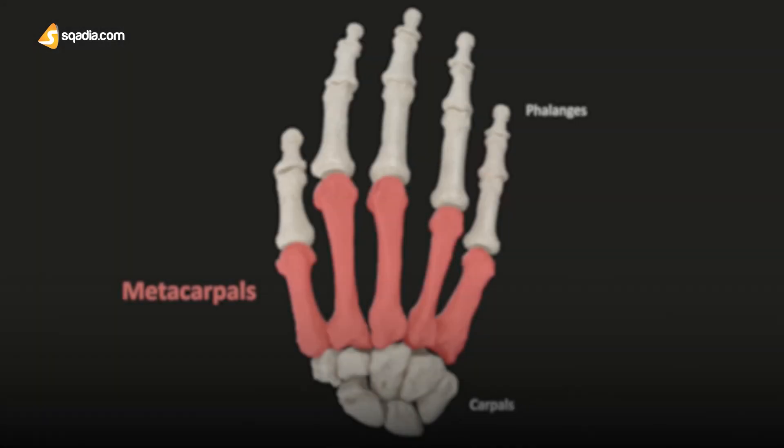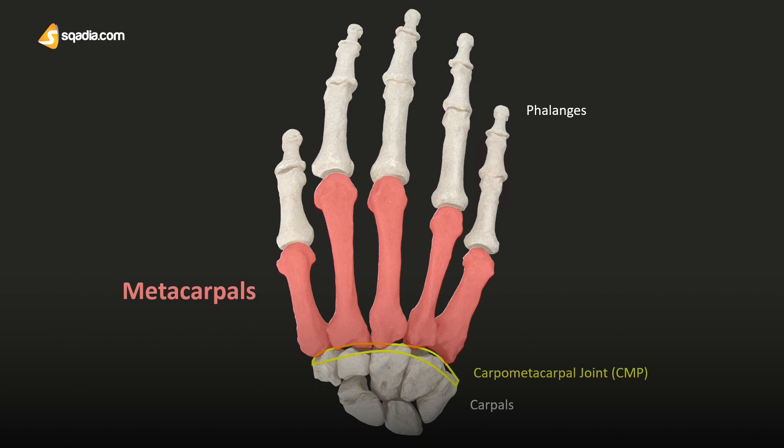The metacarpal bones correspond to the metatarsal bones in the foot. The metacarpal bones form the carpometacarpal joint where they are connected to the carpal bones of the wrist proximally, and form the metacarpophalangeal joint when they combine with the phalanges of the fingers distally. The MCP joint is commonly referred to as the knuckle joint.